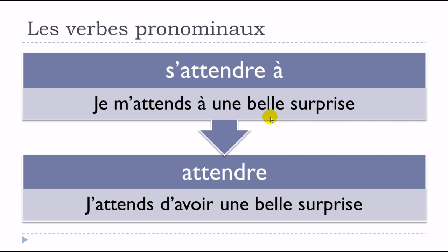For example: 'je m'attends à recevoir un appel' means I expect to receive a call, and 'j'attends le train de 15 heures' means I'm waiting for the 3 o'clock train. Similarly, 'je m'attends à une belle surprise' and 'j'attends d'avoir une belle surprise' express almost the same idea, showing it's possible to use either the pronominal or non-pronominal form.